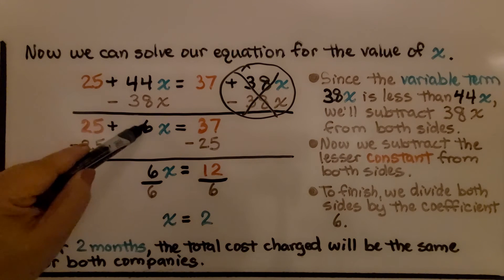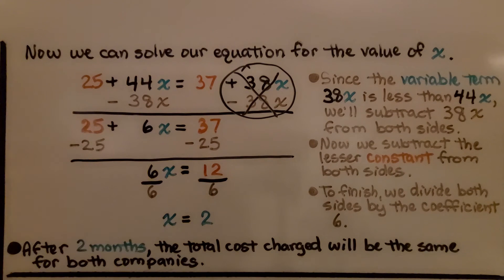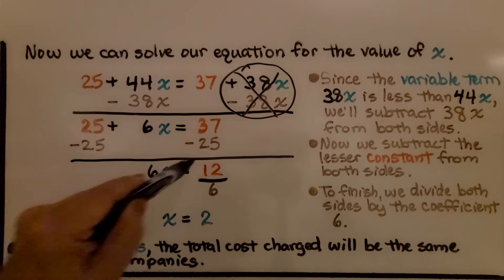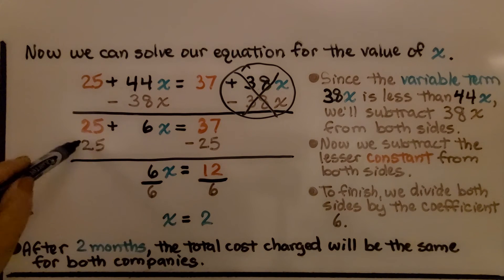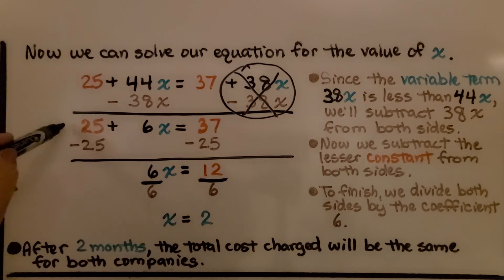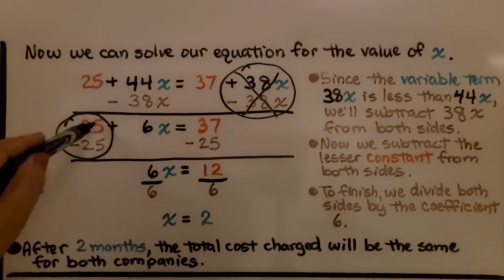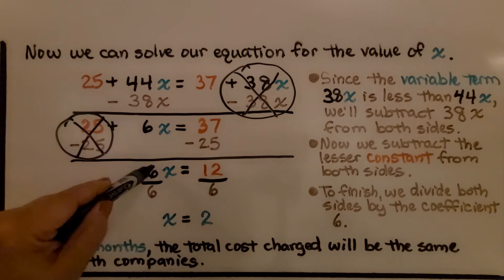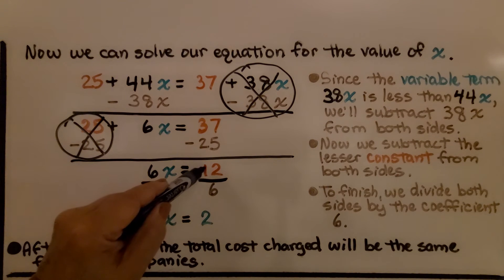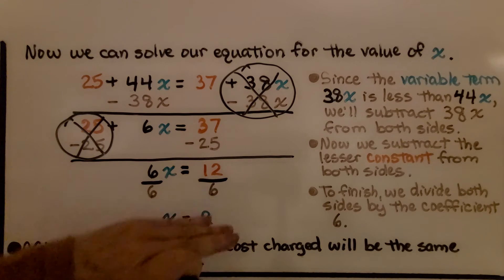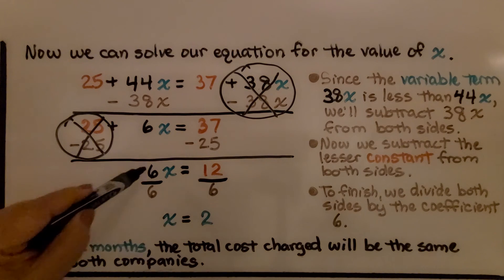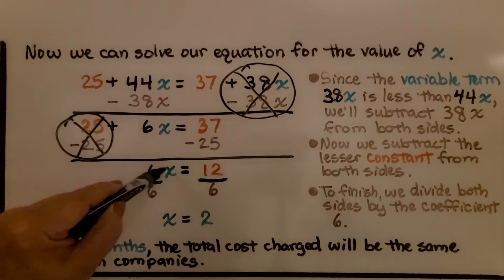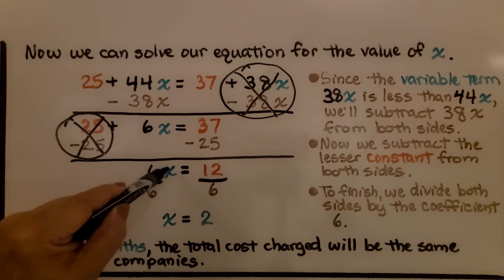Now we have 25 plus 6x is equal to 37. We're trying to isolate x all by itself with no coefficient to one side. Since we have a 25 here and a 37 here, we can take away this 25 — it's a positive 25, so we do minus 25 from each side. That's going to create a zero pair: plus 25 minus 25 makes zero. Now we only have 6x on this side and a positive 12 on the other, giving us 6x is equal to 12. Now 6x means 6 times some number x, 6 multiplied by some number x.